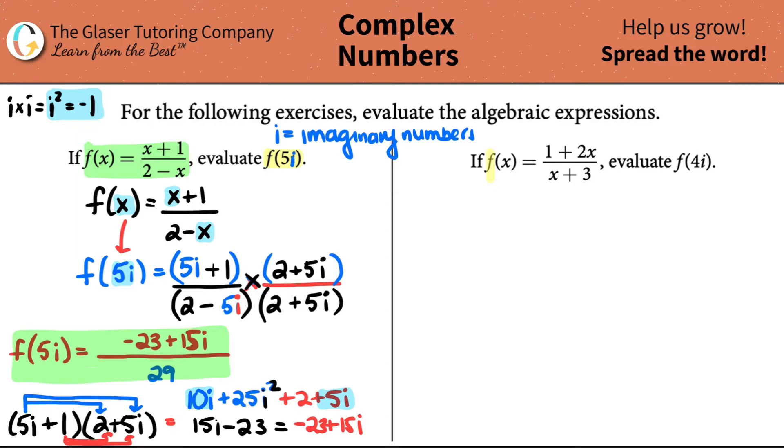If f of x equals 1 plus 2x over x plus 3, we need to evaluate f of 4i. So same thing's going on. We have this for right now: 1 plus 2x over x plus 3. I need to substitute. Anytime I see an x, I got to put a 4i in here. So where are the x's? There was one here, and there's one here. So this would be equal to 1 plus 2 times 4i all over 4i plus 3.